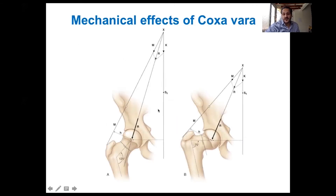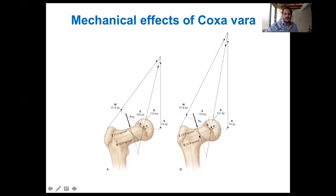Regarding the effects of coxa vara on hip dynamics: the elevation of the greater trochanter above the center of the head shortens the abductor muscles from origin to insertion, making them weaker, while also increasing their lever arm. Similarly, the shorter neck decreases the lever arm of the abductors. The net result is abductor weakness, causing most of the symptoms we will see.